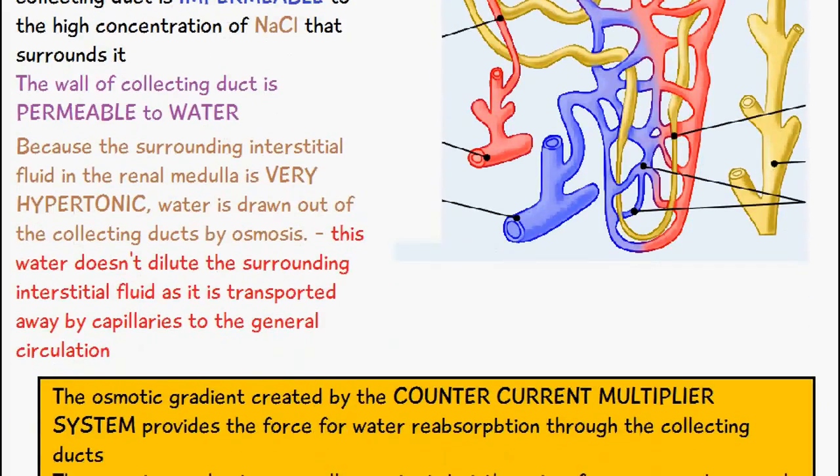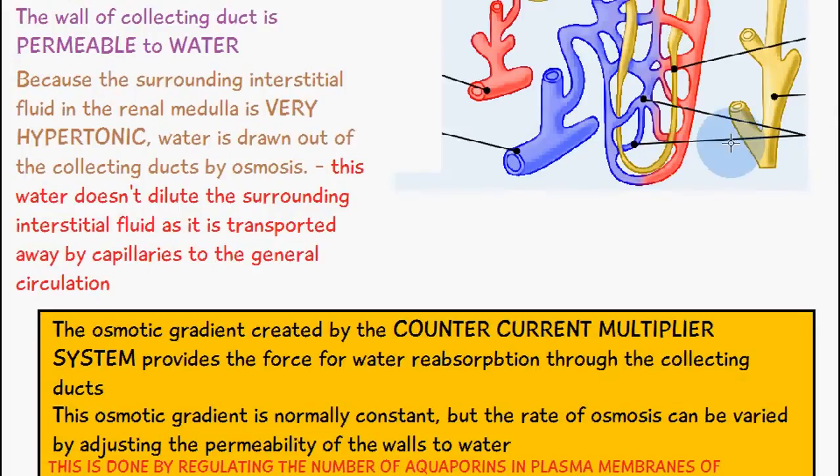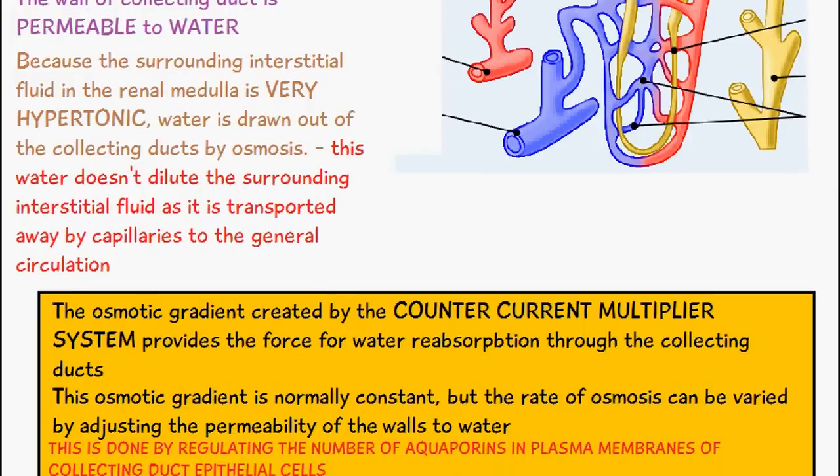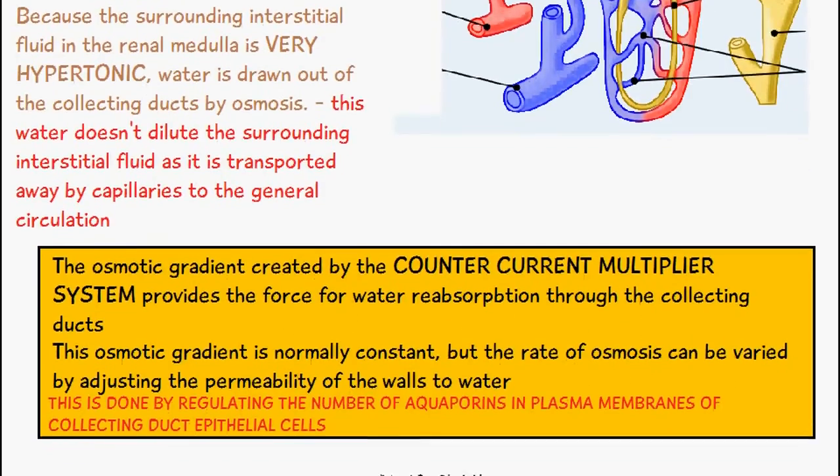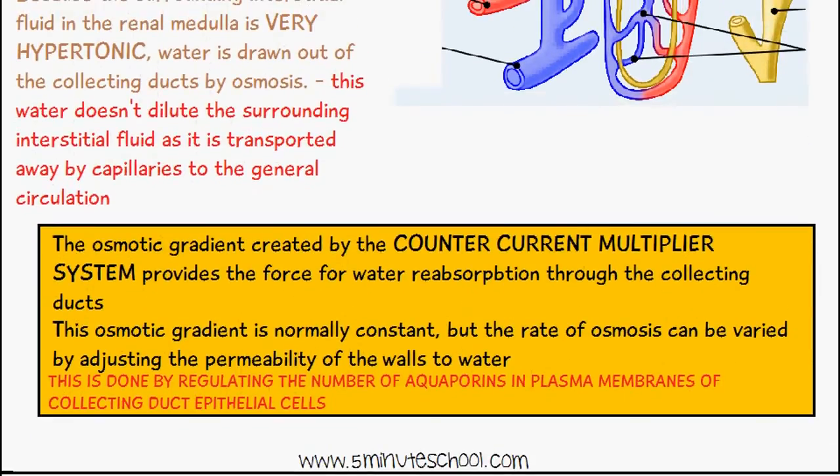This osmotic gradient was created by the counter current multiplier system. I have made a video on that and I will link that in the description below. This counter current multiplier system provides the force for water reabsorption through the collecting ducts and the osmotic gradient is normally quite constant, but the rate of osmosis can be varied by adjusting the permeability of the walls to water, and this is done by regulating the number of aquaporins in the plasma membranes of the collecting duct epithelial cells.